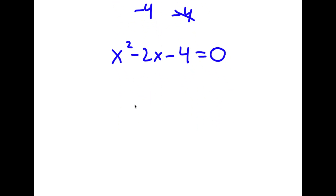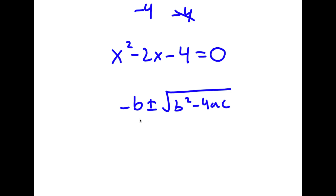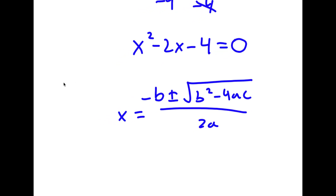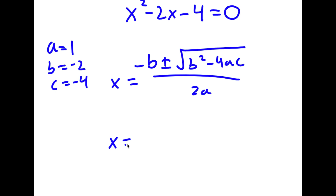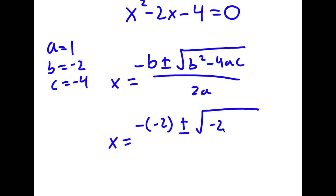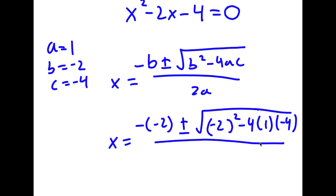Now to solve this, I'm going to use the quadratic formula, which is negative b plus or minus the square root of b squared minus 4ac all over 2a. So in this case, a is 1, b is negative 2, and c is negative 4. So now I have x is equal to negative of negative 2 plus or minus the square root of negative 2 squared minus 4 times 1 times negative 4, all over 2a.